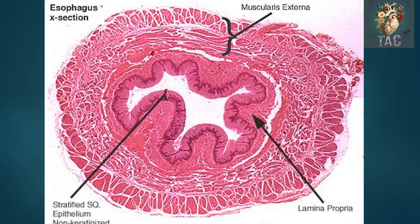These glands secrete alkaline secretion to neutralize the acidity of the stomach contents. In the histological section through the esophagus you can appreciate the epithelium — this is stratified squamous non-keratinized epithelium thrown into folds forming a star-shaped lumen because of the contraction of the smooth muscle cells of the muscularis mucosa.